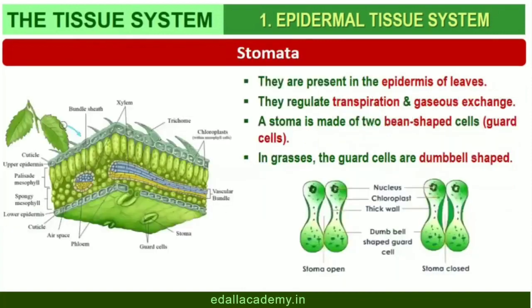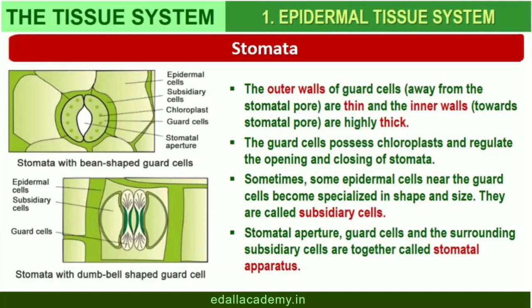Stomata are structures present in the epidermis of leaves. Stomata regulate the process of transpiration and gaseous exchange. Each stoma is composed of two bean-shaped cells known as guard cells, which enclose the stomatal pore. In grasses, the guard cells are dumbbell-shaped. The outer walls of guard cells, away from the stomatal pore, are thin, and the inner walls, towards the stomatal pore, are highly thickened. The guard cells possess chloroplasts and regulate the opening and closing of stomata. Sometimes a few epidermal cells in the vicinity of the guard cells become specialized in shape and size and are known as subsidiary cells. The stomatal aperture, guard cells, and the surrounding subsidiary cells are together called the stomatal apparatus.